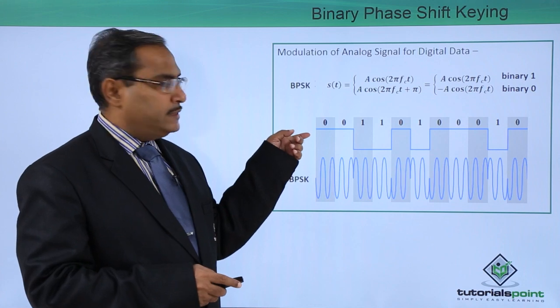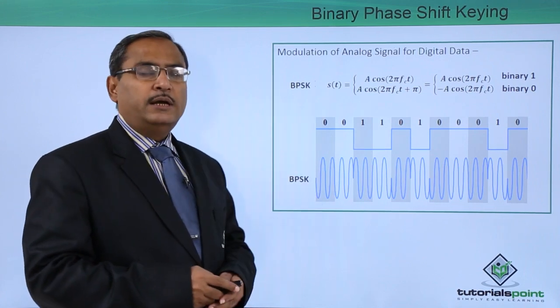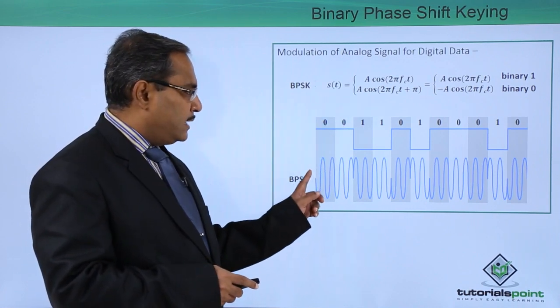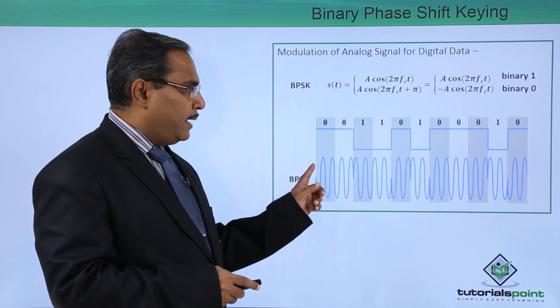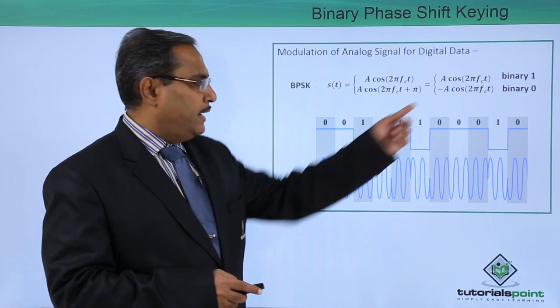Here you can find that we are having these respective binary inputs, and we are converting it to the analog signal. For binary 0, we are having this respective waveform. You can find that it is minus.